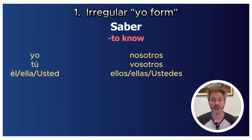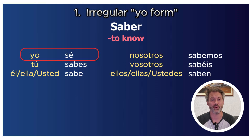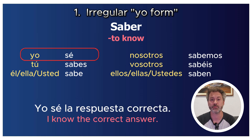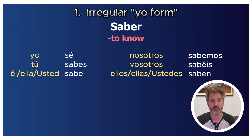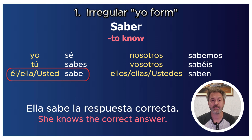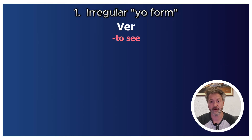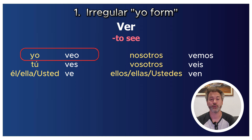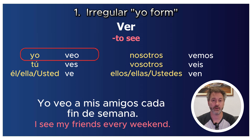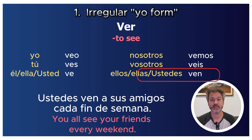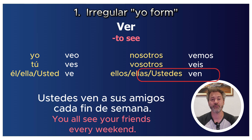Saber changes to 'yo sé' — 'Yo sé la respuesta correcta' (I know the correct answer), while 'Ella sabe la respuesta correcta' is regular. Ver becomes 'yo veo' — 'Yo veo a mis amigos cada fin de semana' (I see my friends every weekend), while 'Ustedes ven a sus amigos cada fin de semana' — You all see your friends every weekend.